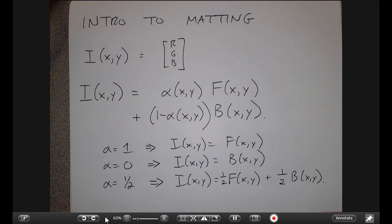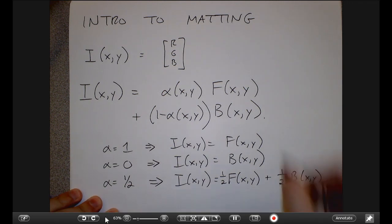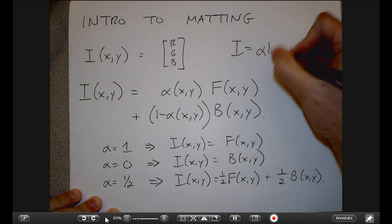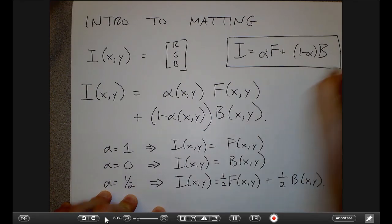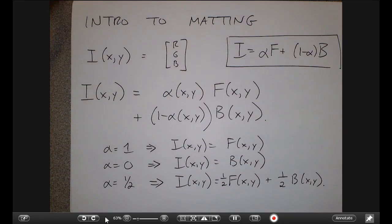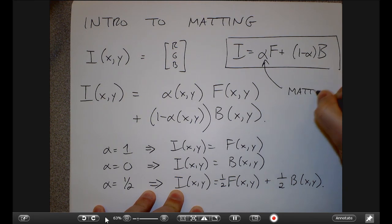Most of the time we deal with images where many pixels are close to zero or one, and some pixels are a fractional distance between the foreground and background. To avoid writing this of XY every time, I'll abbreviate the equation to: the image equals alpha times the foreground plus one minus alpha times the background, with the understanding that everything depends on the pixel location. This alpha is what we call the matte.